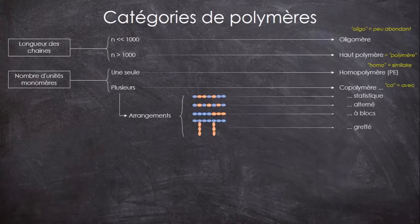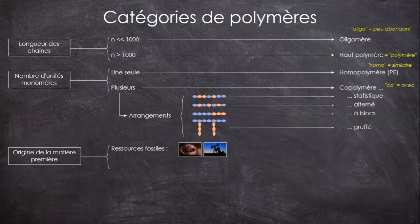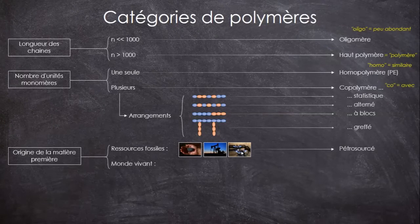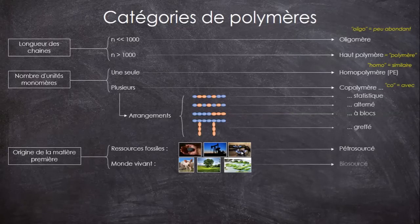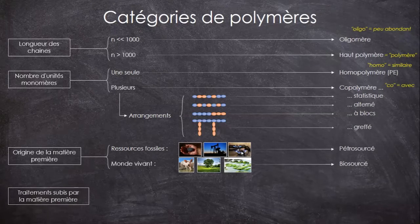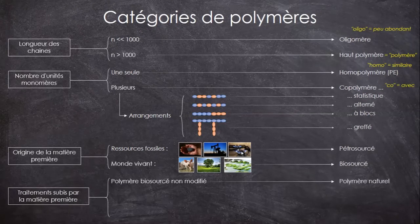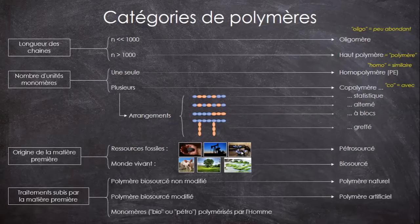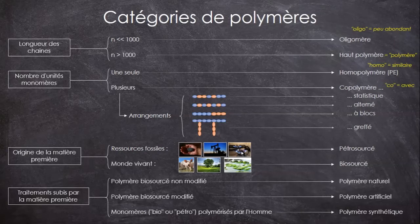Ensuite, il existe des appellations selon l'origine des polymères ou l'origine de leurs monomères. Soit les monomères sont issus de ressources fossiles, donc le charbon, le pétrole ou le gaz : les polymères synthétisés avec sont dits pétro-sourcés. Soit les monomères ou les polymères sont issus du monde vivant, donc les animaux, les végétaux ou les algues : ils sont alors dits bio-sourcés. Si le polymère est directement issu du monde vivant sans modification, on le dit naturel. Si l'homme modifie un polymère naturel, il est dit artificiel. Et si c'est l'homme qui polymérise les monomères bio-sourcés ou pétro-sourcés, on parlera de polymères synthétiques. Donc oui, un polymère artificiel est bio-sourcé, et un polymère synthétique peut l'être aussi.